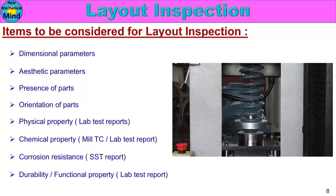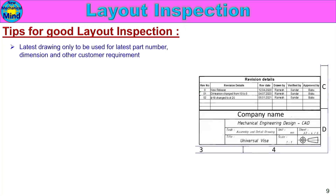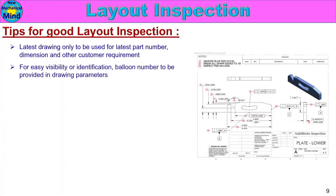Tips for good layout inspection. First, use only the latest drawing — the latest part number, dimensions, and other customer requirements must be verified. Using the latest drawing is the most important step. Second, for easy visibility and identification, balloon numbers should be provided on all drawing parameters.